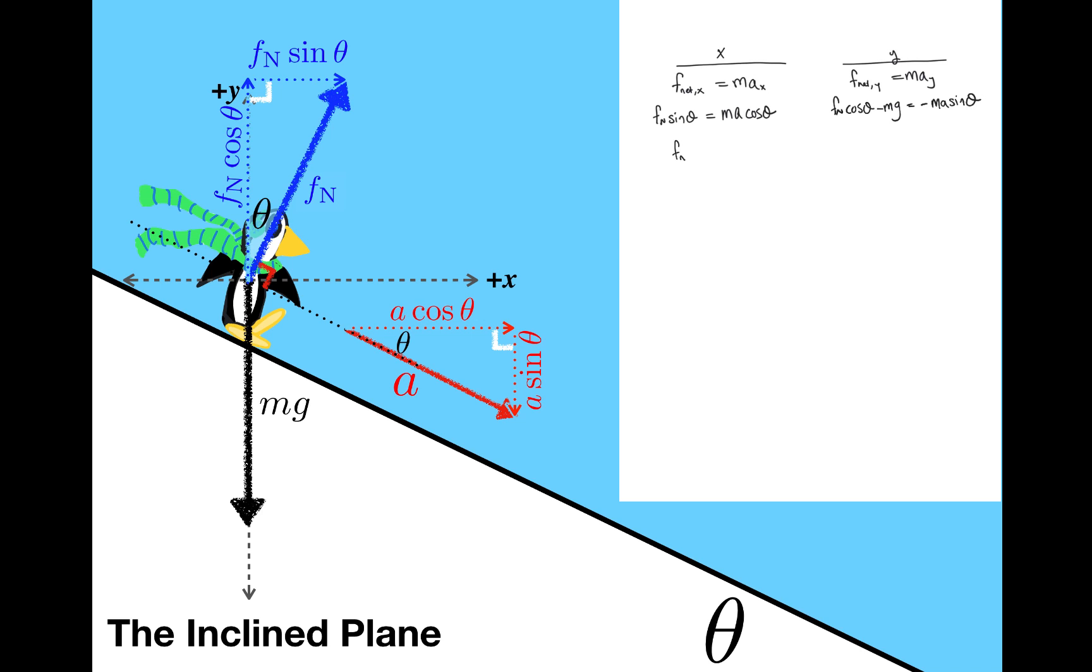I'm going to go ahead and solve the x-equation for fn, so fn is equal to ma cosine theta over sine theta, and then I'm going to make a substitution into the y-equation. Then I'm going to multiply through by sine theta to clear it out of the denominator, and I'm going to collect the cosine squared theta and sine squared theta terms on the left-hand side of the equation. Remember that cosine squared theta plus sine squared theta is equal to 1, so I can get rid of it, and there's an m on both sides, so I'll cancel those as well, and all of a sudden I am left with the pretty simple equation, a is equal to g sine theta. Notice that this is exactly the same result that I arrived at earlier.